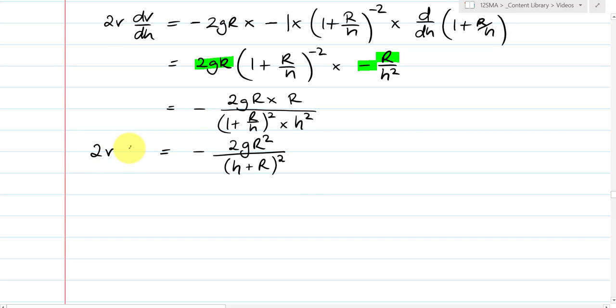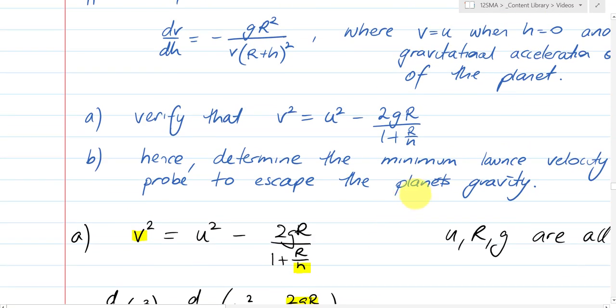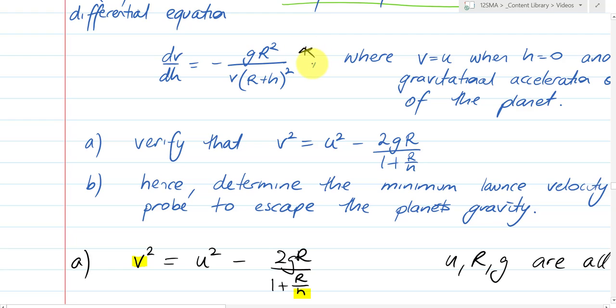Now of course this was 2v dvdh was equal to that. So now I divide by 2v. And dvdh is equal to this 2 with this 2 cancels out. I'm left with negative gr squared over v h plus r squared. And if I go back up here, I can see that that is my original function. So I've shown, I've verified that this matches that.